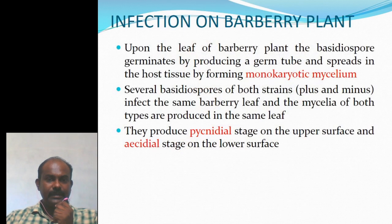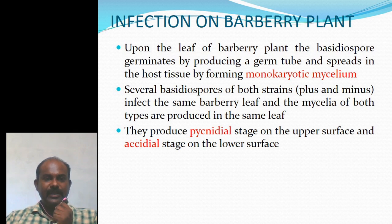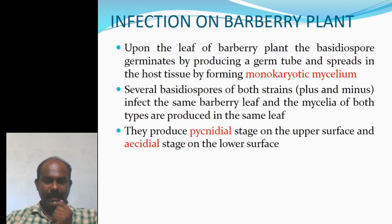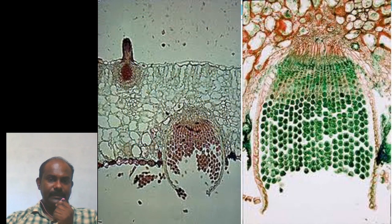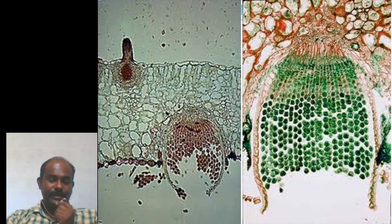Upon the leaf of the Barberry plant the basidiospore germinates by producing a germ tube and spreads in the host tissue by forming monokaryotic mycelia. Several basidiospores of both strains — plus and minus — infect the same Barberry leaf, and the mycelia of both types are produced in the same leaf. They produce the pycnidial stage on the upper surface and the aecial stage on the lower surface. The pycnidia carry spermatia and receptive hyphae, whereas the aecia on the lower side produce aeciospores.